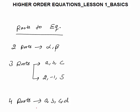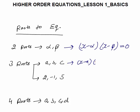Next, let's discuss how to form the equation from the roots. This we have learned in quadratic equations: when the two roots are given, alpha and beta, the equation will be x minus alpha times x minus beta equals to 0. The same is true for higher order equations. If 3 roots are given — a, b, and c — the equation will be x minus a times x minus b times x minus c equals to 0. That will be the cubic equation.